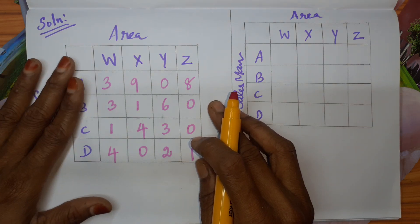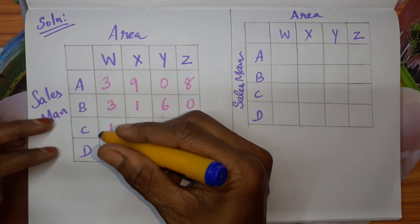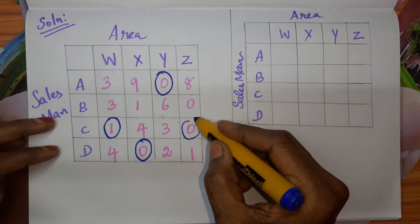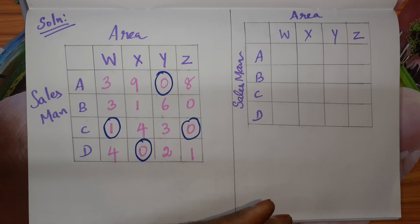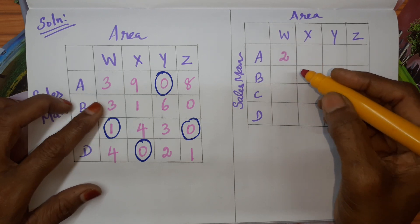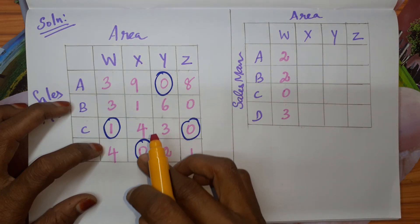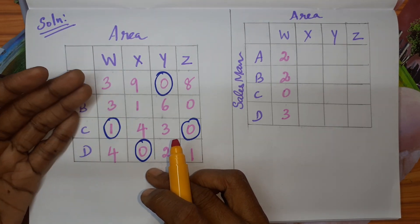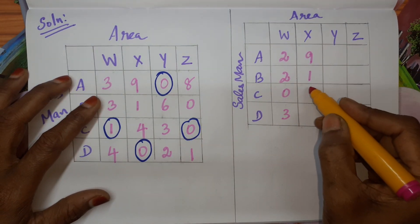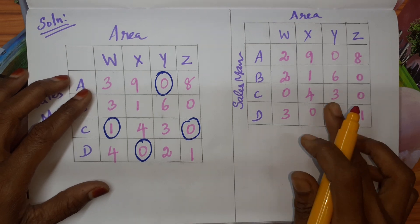The same procedure has to be done column-wise. In every column, first locate the least element. In the first column, 1 is the least element; second column, 0; third column, 0; and fourth column, 0. For the first column, subtract 1: 3−1=2, 3−1=2, 1−1=0, 4−1=3. Since 0 is the least element in the remaining columns, subtracting 0 changes nothing, so those columns remain the same — 9, 1, 4, 0.